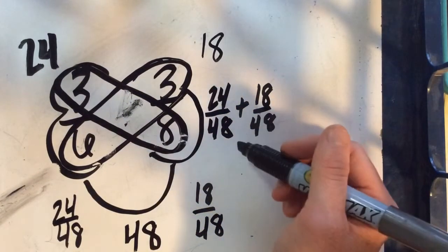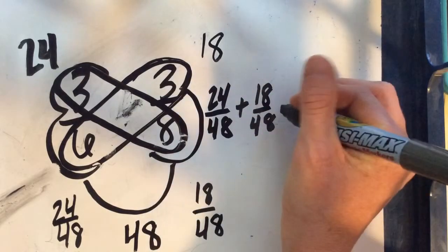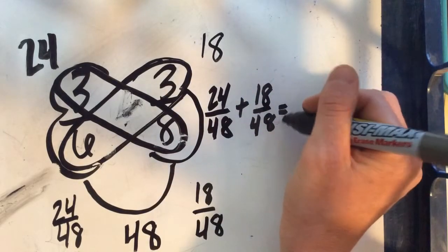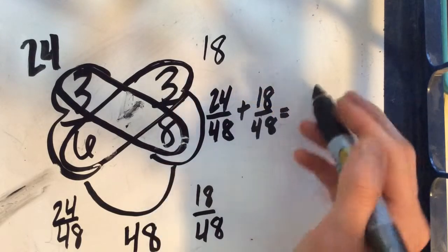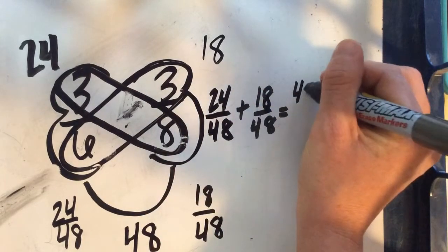Okay, so we do 24 plus 18. So I can think 20 plus 10 is 30, plus 12 more would give me 42.